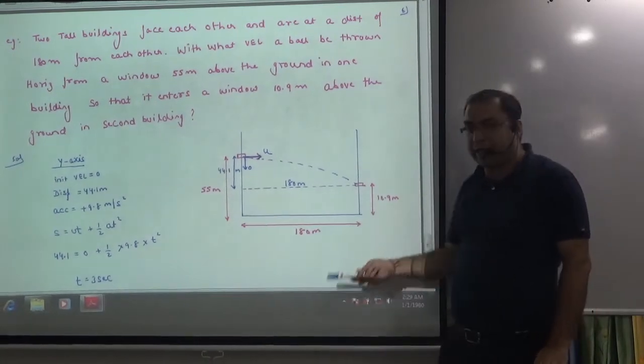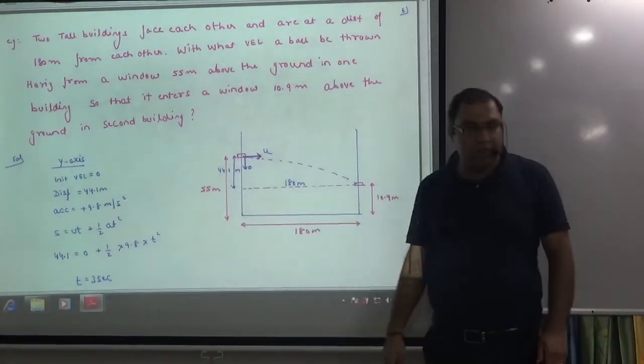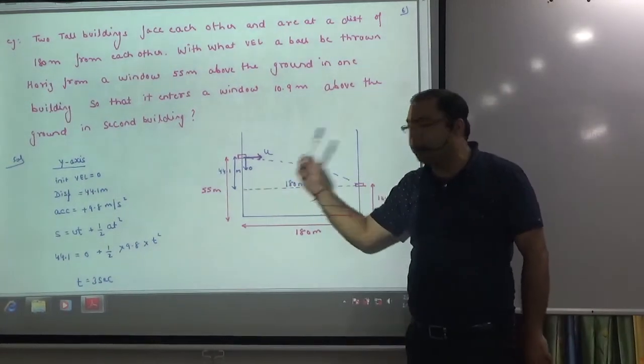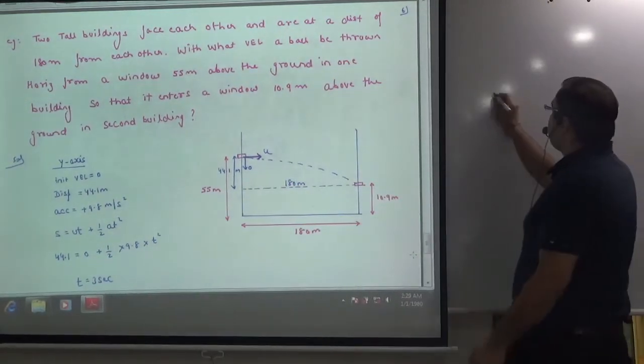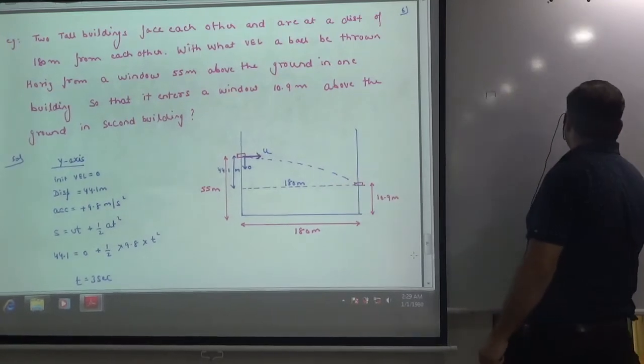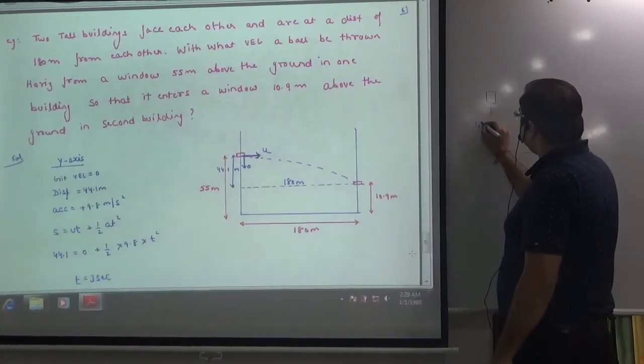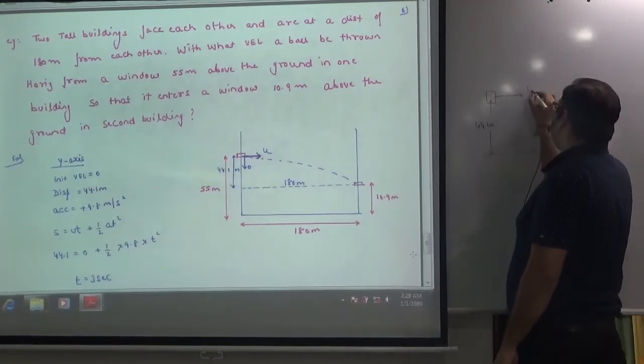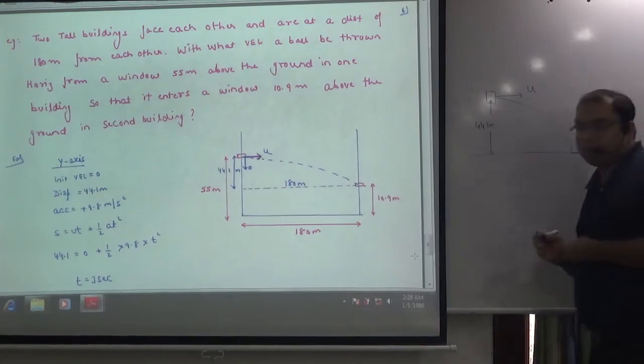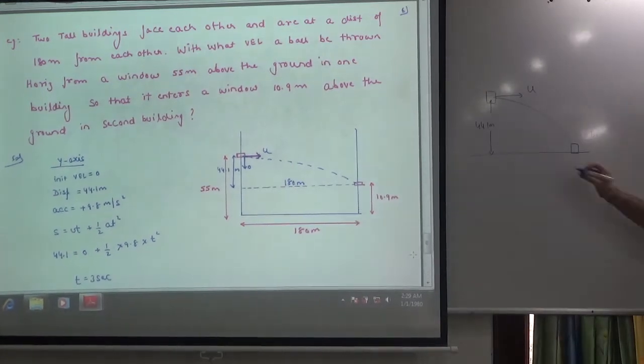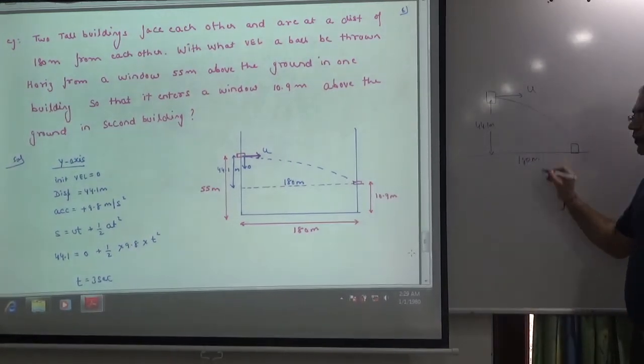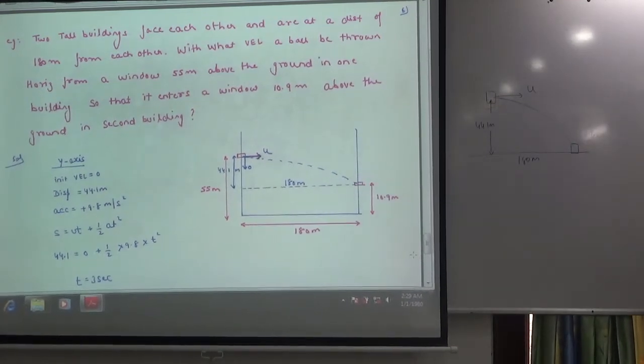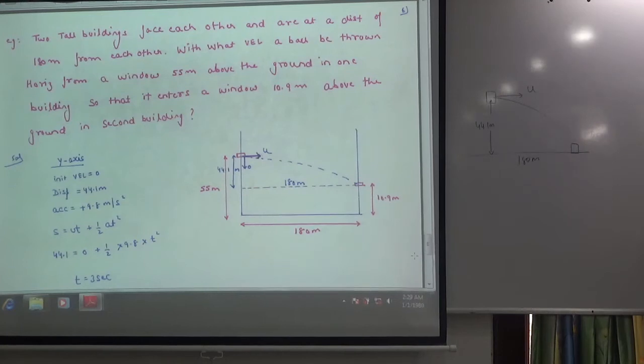If this height is 10.9 and this height is 55, then we subtract 10.9, which gives us 44.1. So our question simply is, from this window to this window at a height of 44.1 meters, what is U? So our problem is here and this distance is 180 meters.